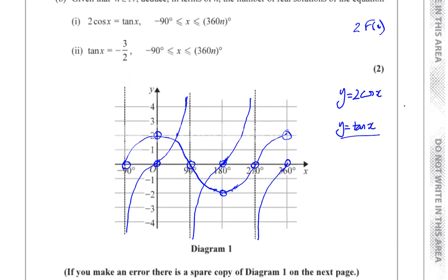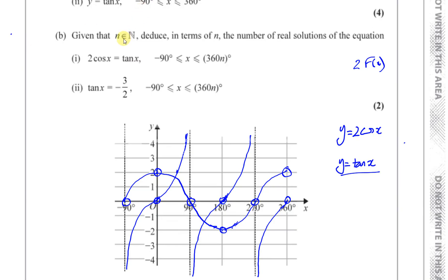Then part B. Part B says given that n is an element of, this symbol n here means the integers. So deduce in terms of n the number of real solutions of the equation 2 cosine x equals tan x between minus 90 and 360 times n.